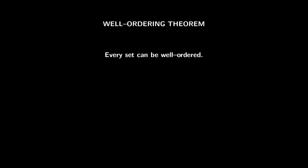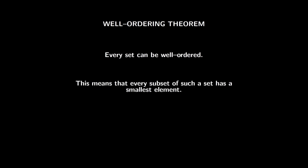On the other hand, this axiom really leads to some surprising results. First, it is actually completely equivalent to the well-ordering theorem: every set can be well-ordered. This means that every subset of such a set has a smallest element, like natural numbers — no matter which subset you take, there is a smallest element.